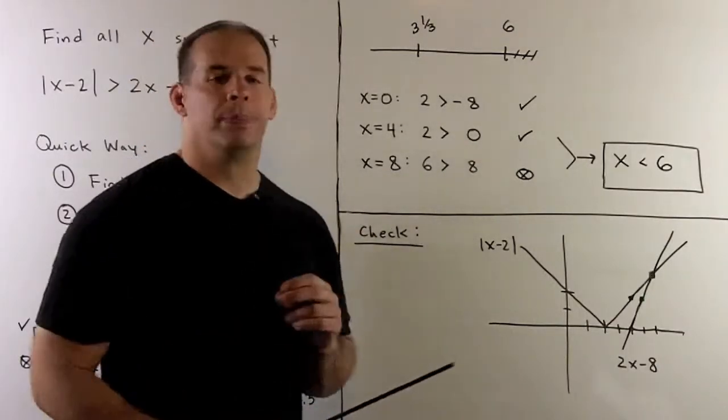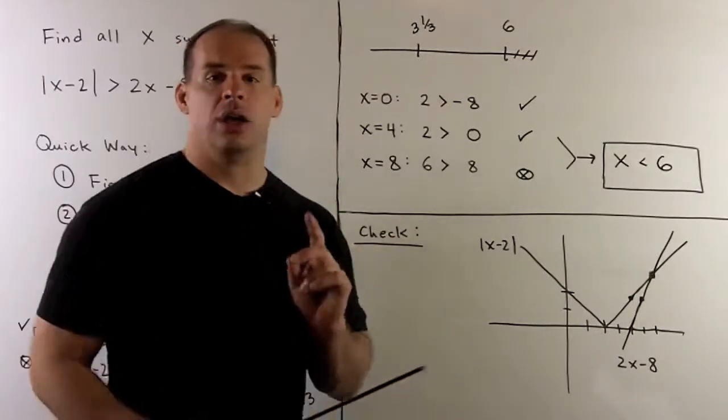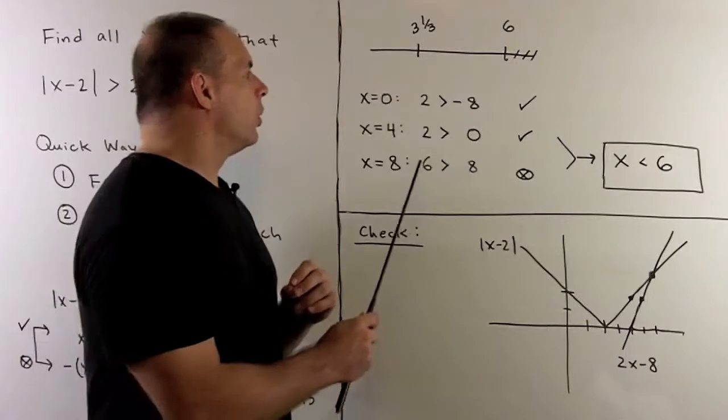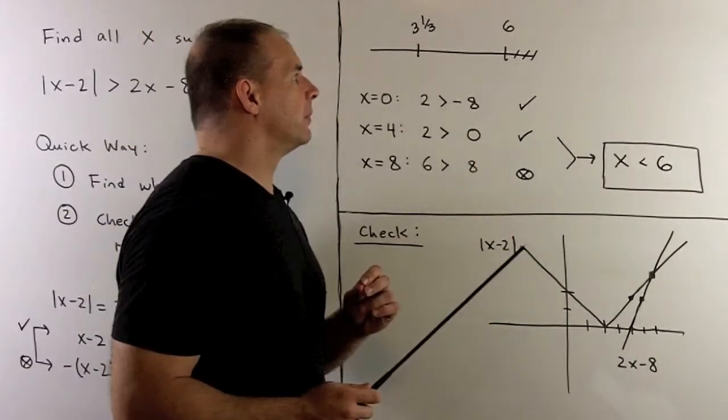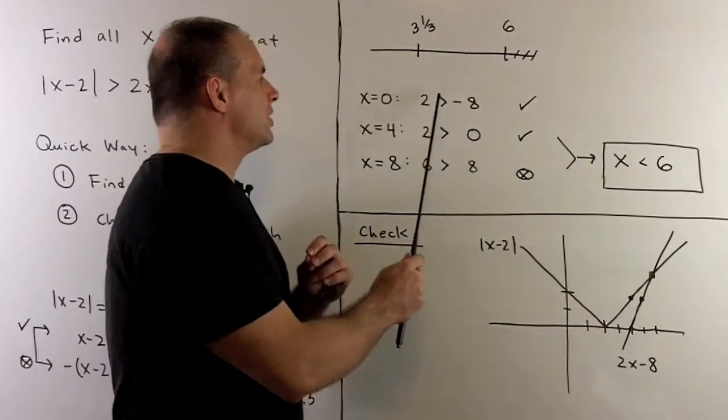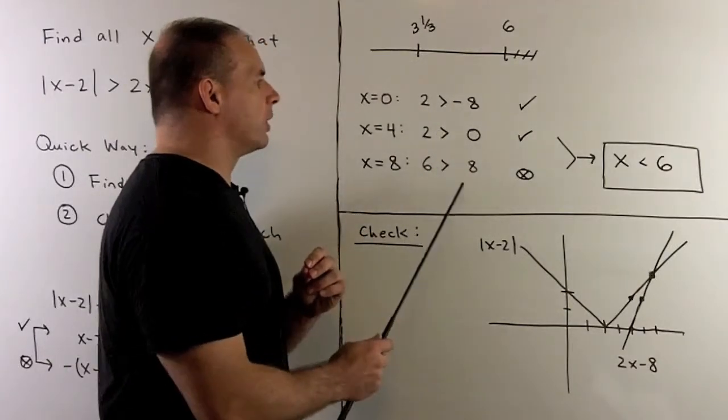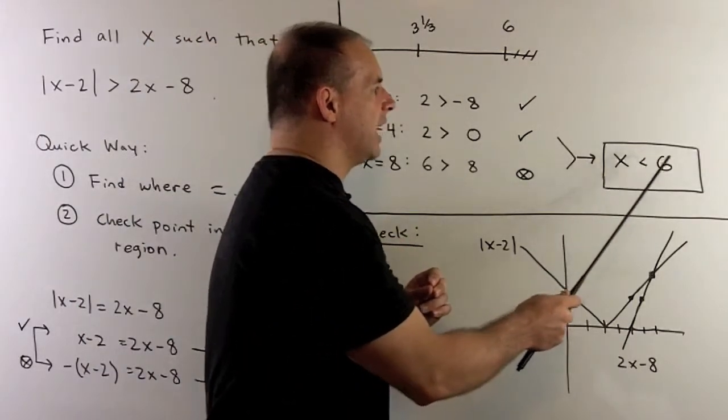6 greater than 8, no. So we're going to throw away the region where we have x strictly greater than 6. If we consider each region that we're keeping, we're going to have, as our answer, x strictly less than 6.